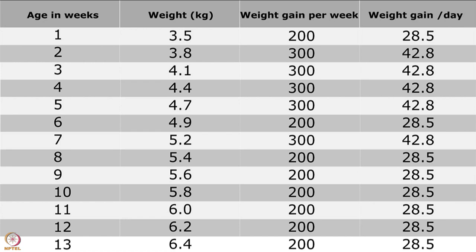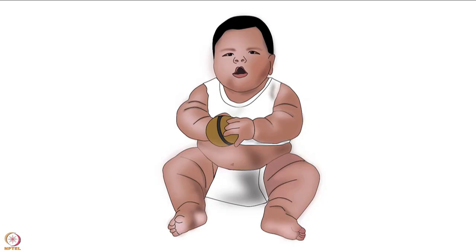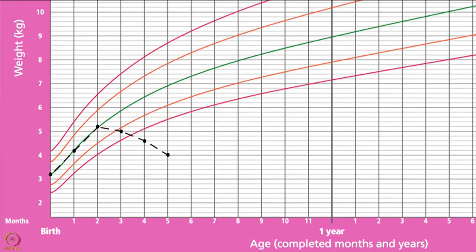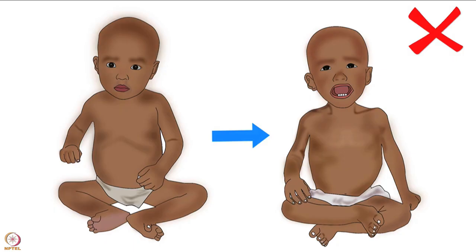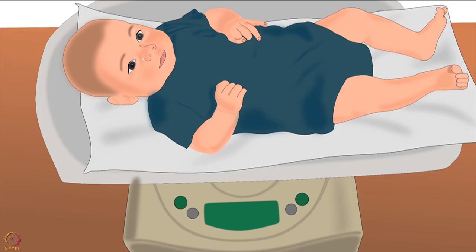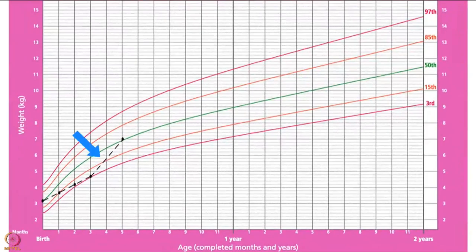When interpreting growth charts, be alert for situations that suggest risk. A sharp decline in the growth line of a child indicates a growth problem. Even if a child is overweight, he should not have a sharp decline in his growth, as losing too much weight rapidly is not healthy. The overweight child should maintain weight while increasing in length. On the other hand, a rapid incline in the growth line is sometimes healthy.